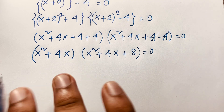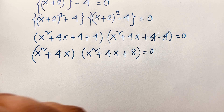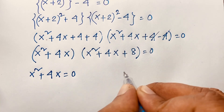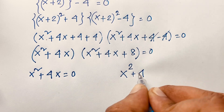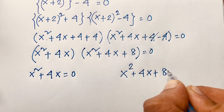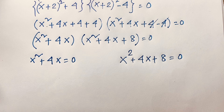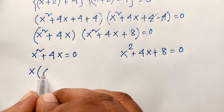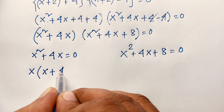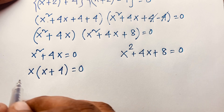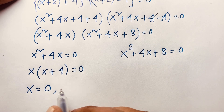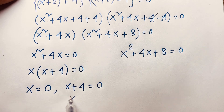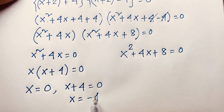We have two cases. The first case is x squared plus 4x equals 0. The second case is x squared plus 4x plus 8 equals 0. For the first case, x is common, so we factor: x times (x plus 4) equals 0. This gives x equals 0, or x plus 4 equals 0. Subtracting 4 from both sides: x equals negative 4.